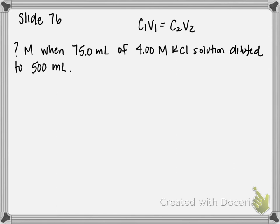So first step for this is to determine what our C1, V1, C2, and V2 are, and to determine what exactly we're solving for. Our original concentration is 4 molar and our original volume is 75 milliliters. So C1 is 4 molar and V1 is 75 milliliters.